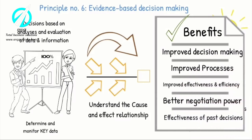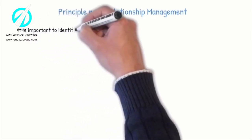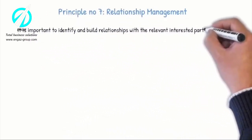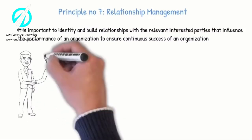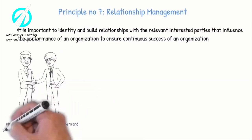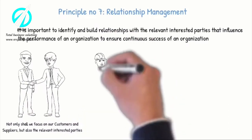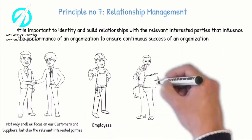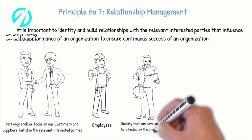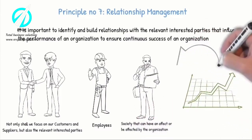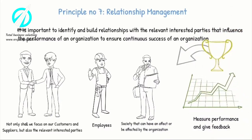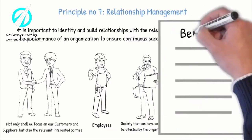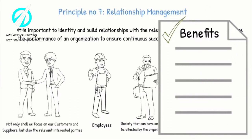Principle number seven: Relationship Management. It is important to identify and build relationships with the relevant interested parties that influence the performance of an organization to ensure its continuous success. Not only shall we focus on our customers and suppliers but also the relevant interested parties like the employees and the society that can have an effect on or be affected by the organization. It's important to measure performance and give feedback, and to encourage and recognize improvements and achievements by suppliers and partners.